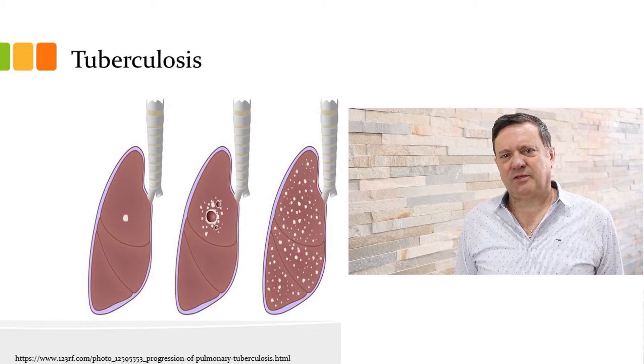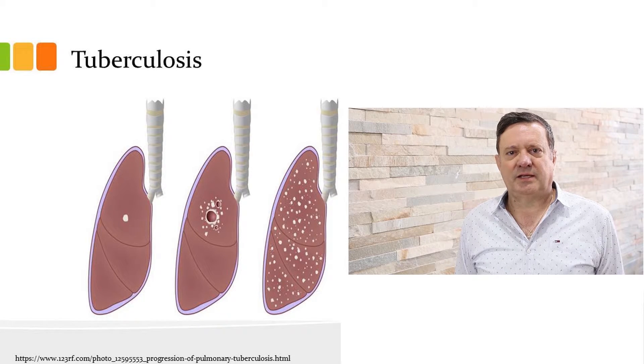Bloodstream spread can spread to other organs including the kidneys, the intestines and the brain. Once a child experiences a tuberculosis infection of the brain it usually has dire consequences — very difficult to treat and ultimately often leads to brain damage, and a child that's not necessarily going to lead a normal happy life that we all want for our children.